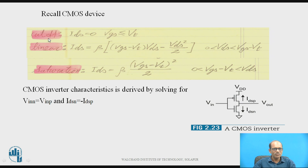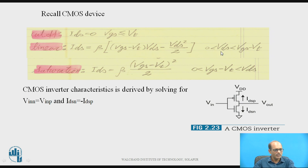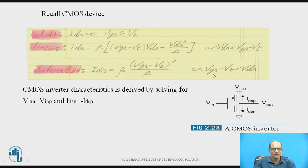In summary, for the NMOS: when it is in cutoff, VGS is less than or equal to VT and the drain current is 0. For non-saturation or linear region, IDS equals beta times (VGS minus VT) times VDS minus VDS-squared over 2, with the condition VDS greater than 0 and less than VGS minus VT. For saturation, VDS should be greater than VGS minus VT, and VGS minus VT should be greater than 0. These are the three operating regions: cutoff, linear (non-saturation), and saturation.